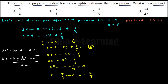Now checking which x value satisfies the proper fraction condition: x equals 2 over 3 — the numerator is less than the denominator, so it is a proper fraction. x equals 4 over 3 — the numerator exceeds the denominator, so it is an improper fraction. Therefore, the proper equivalent fractions must have x equal to 2 over 3.